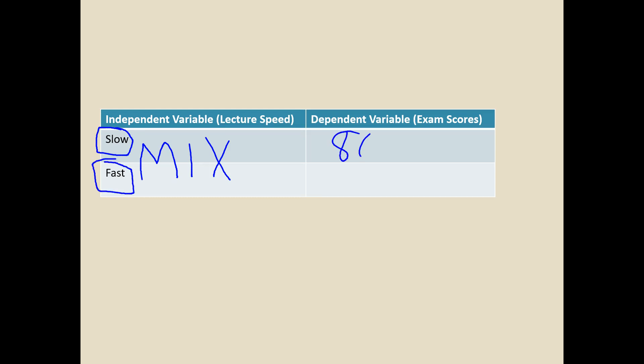And now, if the results turned out like this, we could be more confident that it was the speed of lecturing that caused this group to perform better. Because we'd be more confident that it didn't have to do with the type of students that were in that class. Because we randomly assigned students, we should have pretty similar classes in terms of student motivation.